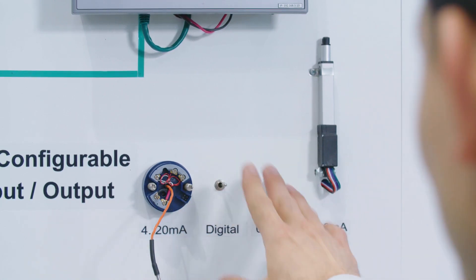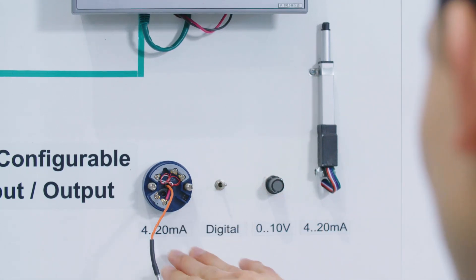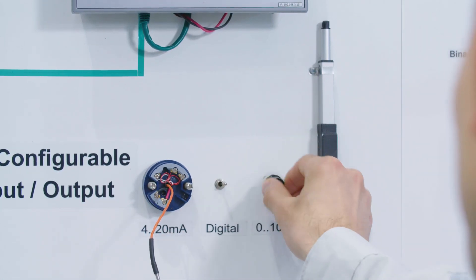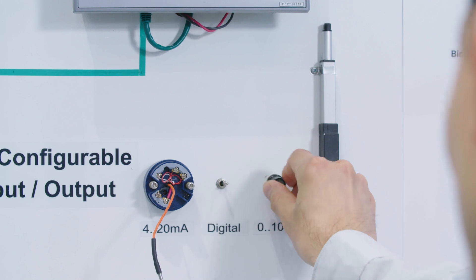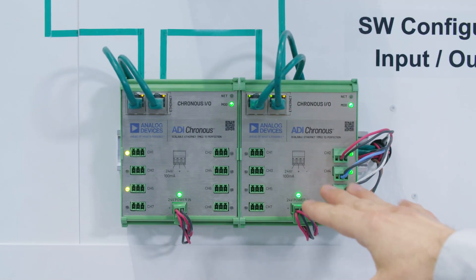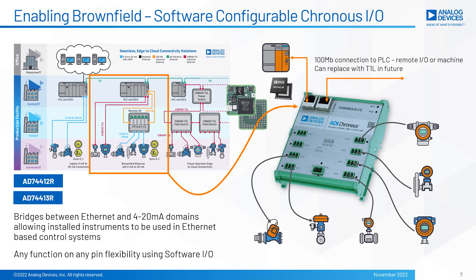To enable digital connectivity to already existing 4 to 20 milliamp loops or other analog sensors, Analog Devices has ADI Chronos, which enables Ethernet connectivity through the ADIN2299 Rapid Platform and the AD74413R software configurable I/O.